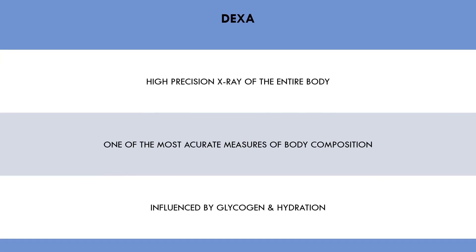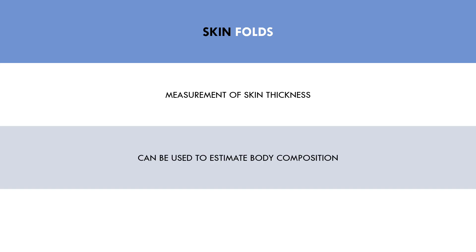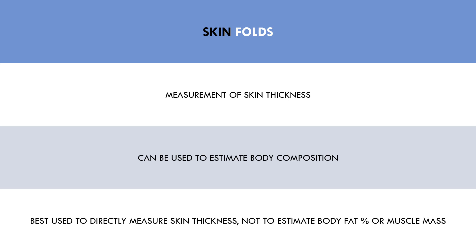The last common form of estimating body composition is skin folds. This is when calipers are used to measure the thickness of the skin and subcutaneous fat. This is used in conjunction with body weight and height to give an estimate of how much body fat a person is carrying. The equations used are often generalisable to the greater population but may not be very accurate for you as an individual. However, skin folds literally measure skin thickness, which is probably the most direct measure of body composition we would want to see. If we have lower skin fold thickness, we are directly able to see more muscles and will have an appearance of being leaner. Therefore, skin folds may best be used to directly measure skin thickness, rather than using an equation to estimate body fat percentage and muscle mass.